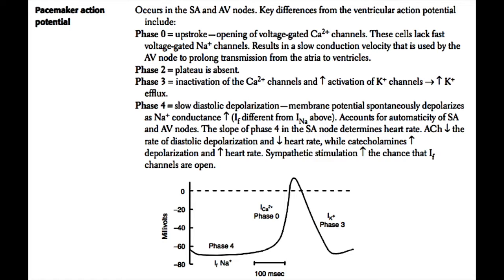Pacemaker cells lack the fast voltage-gated sodium channels, and therefore calcium channels are required for this upstroke. This results in a slow conduction velocity used by the AV node and SA node to prolong transmission. It is most important in the AV node because the AV node's job is to prolong transmission from the atrium to the ventricles in order to give time for the ventricles to fill with each heartbeat.